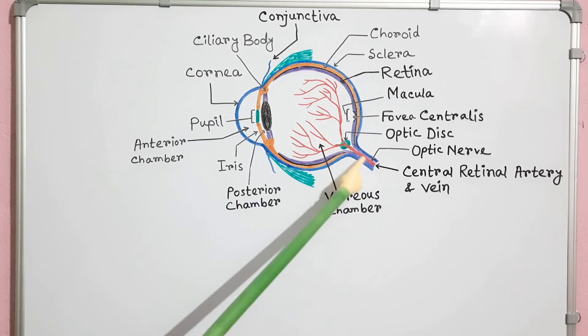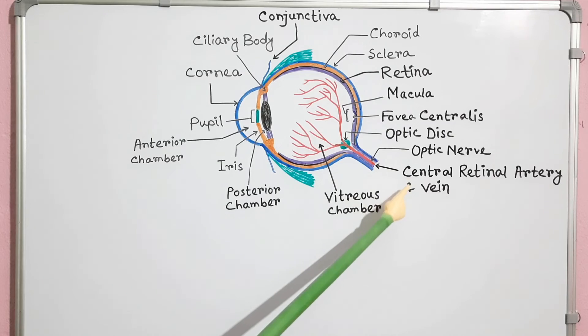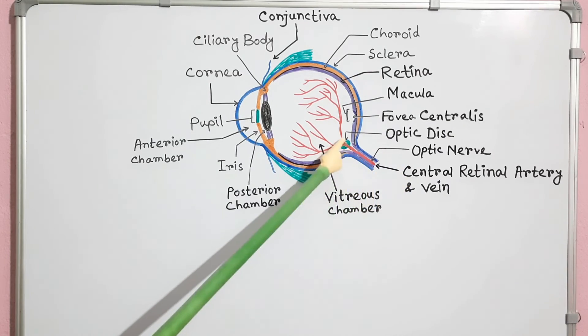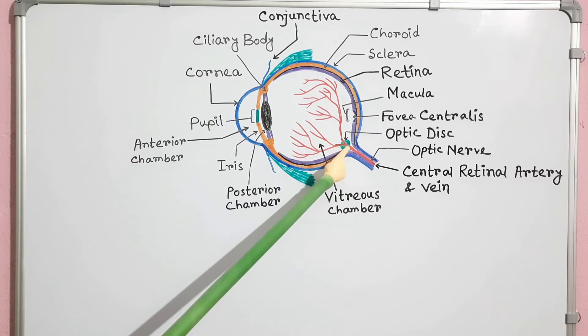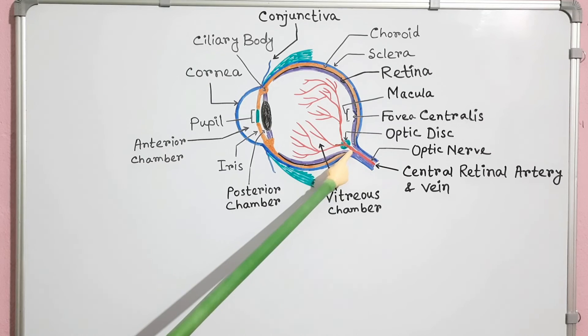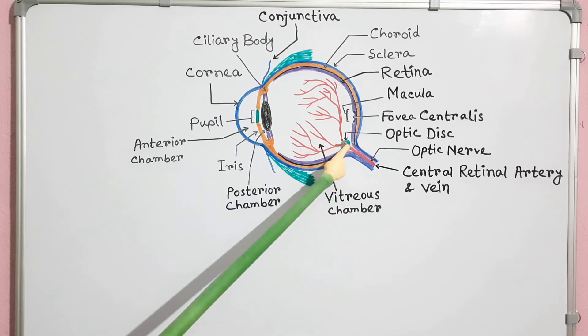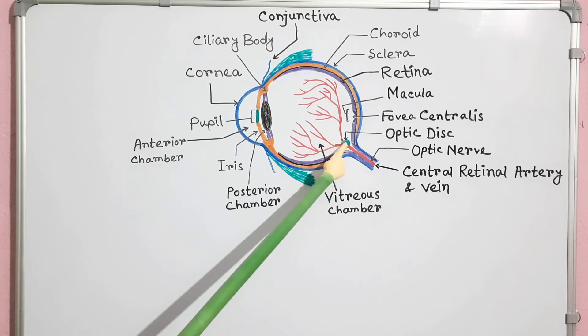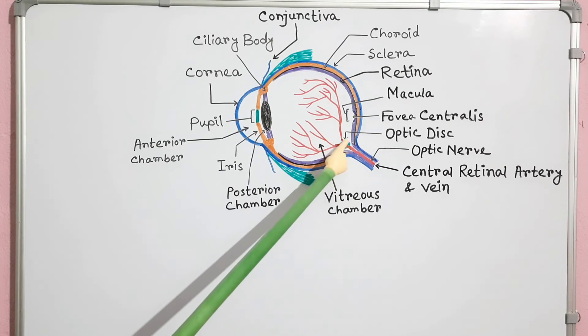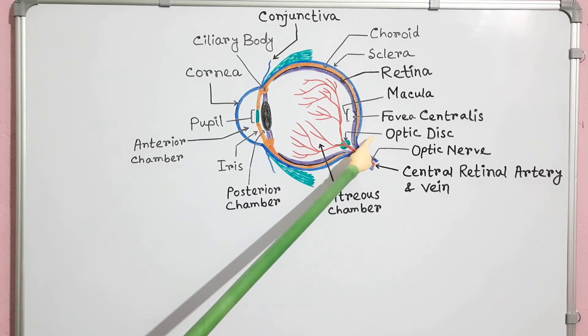Through this optic disc, the central retinal artery enters and the central retinal vein exits the eyeball. It is also the place where axons from the neurons of the retina converge to form the optic nerve. The optic disc contains only axons and no photoreceptor cells. Therefore, it does not respond to light and is called the blind spot of the eye.